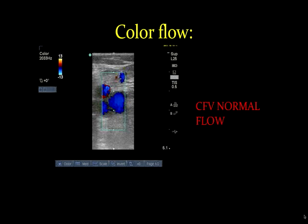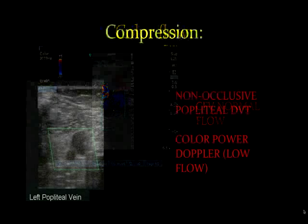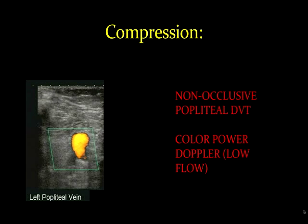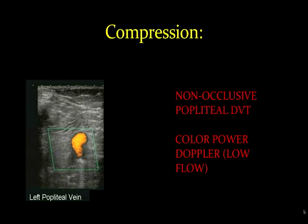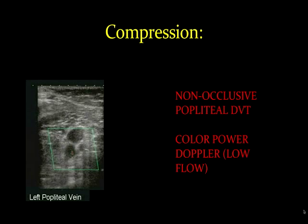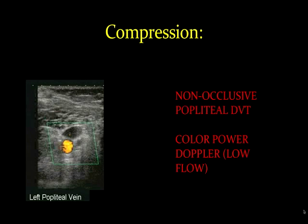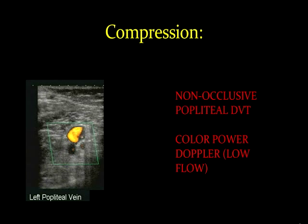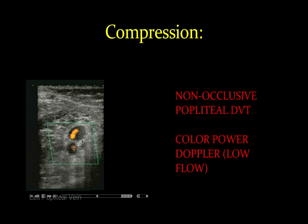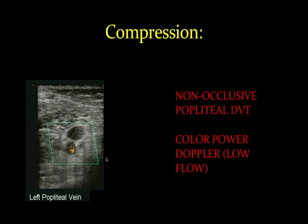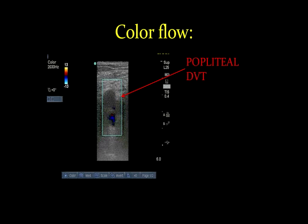Here we have an artery with flow but no flow within the vein — this is an occlusive common femoral vein clot. Here we have an artery and a vein with normal flow. We recommend turning up the gain just a bit so that an area of color dropout is not misinterpreted as a clot, and again you would want to pair color flow with compression. Here is a left popliteal vein with compression and power flow paired — we can find there is a non-occlusive popliteal DVT. We have some flow, but an opacity that is not allowing for compression. Here is color flow across the popliteal vein showing an occlusive popliteal DVT.